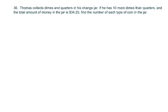Alright, now the last one is a word problem. And I've actually taught this in Algebra 1 before. So, Thomas collects dimes and quarters in his change jar. In my days we collected nickels and pennies. Okay, inflation. So basically he has 10 more dimes than quarters. And here's the total amount. We've got to find the number of each type of coin.